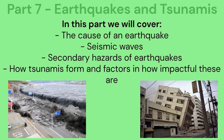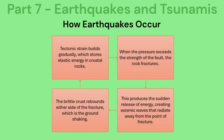Part 7: Earthquakes and tsunamis. This part covers the cause of an earthquake, seismic waves, secondary hazards of earthquakes, how tsunamis form, and factors affecting their impact. Tectonic strain builds gradually, which stores elastic energy in crustal rocks. When the pressure exceeds the strength of the fault, the rock fractures. This produces the sudden release of energy, creating seismic waves that radiate away from the point of fracture. The brittle crust rebounds either side of the fracture — this is the ground shaking.